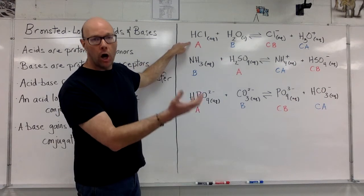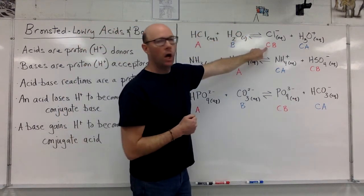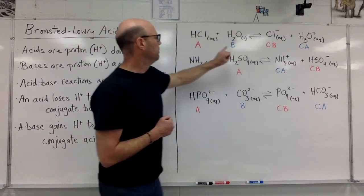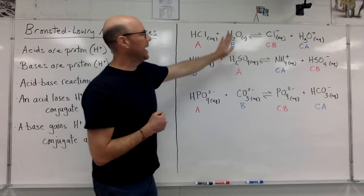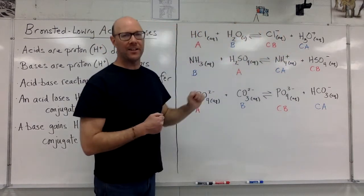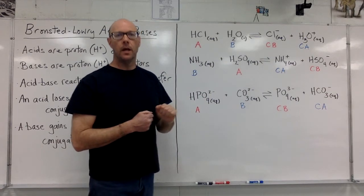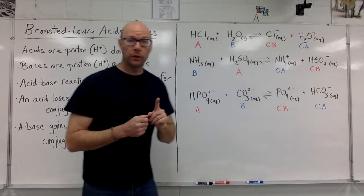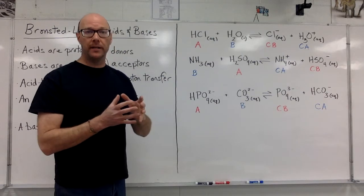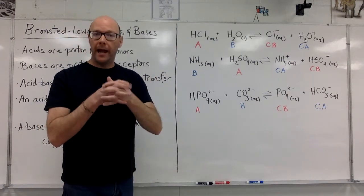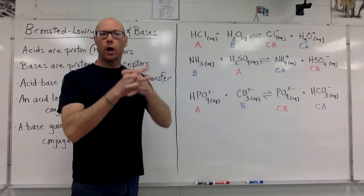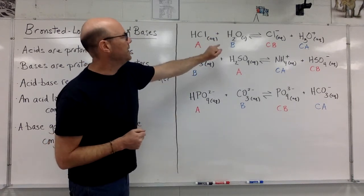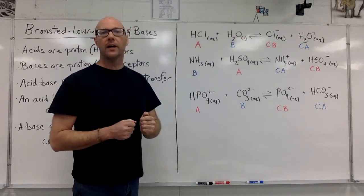HCl lost a proton and turned into the conjugate base. The water gained a proton, it was a base, and it became the conjugate acid. This is important. My colors here aren't by acid and base, they're showing this pair relationship. An acid and the conjugate base are a pair. The base and the conjugate acid, likewise, a pair.